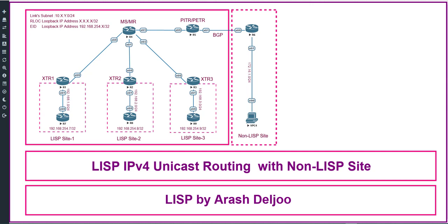Another obvious approach might be to advertise the EID prefixes into the global routing table or RLOC namespace to enable global reachability. However, this negates the entire purpose of LISP, which is locator and identifier separation. It also contradicts the goal of LISP, which is to build a scalable address directory system — continuing to advertise provider-independent EID prefixes on the internet maintains a non-scalable internet routing system.